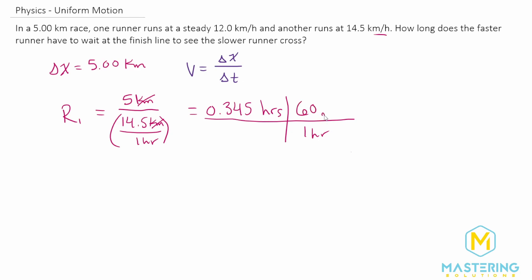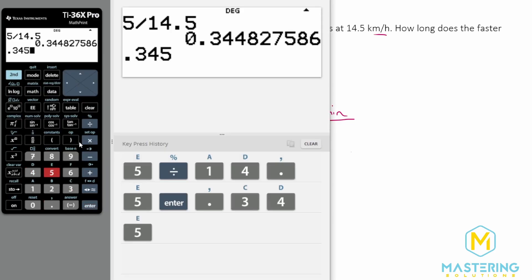So the hours cancel, and we'll take our answer 0.345 and times it by 60 to give us minutes, and we have 20.7 minutes.